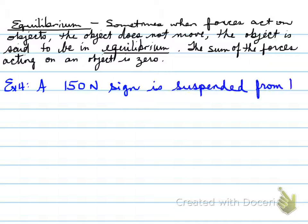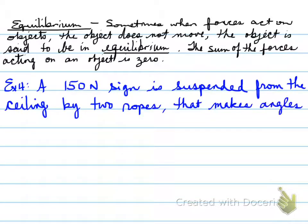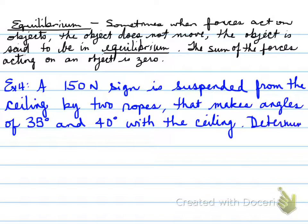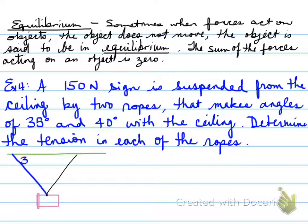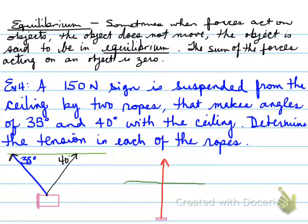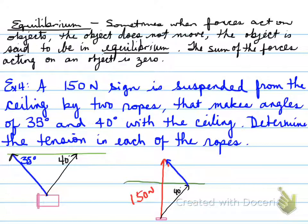A 150-newton sign is suspended from the ceiling by two ropes making angles of 35 degrees and 40 degrees with the ceiling. To find the tension in each rope, we draw the diagram. For the object to be in equilibrium, a 150-newton force must act upward. We move the blue rope over to create a tip-to-tail diagram, with the 35-degree angle repositioned at the ceiling.